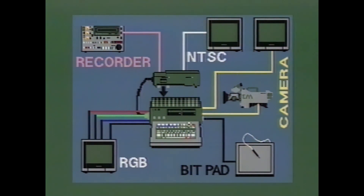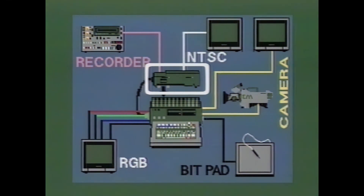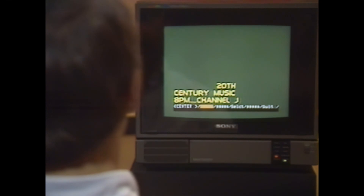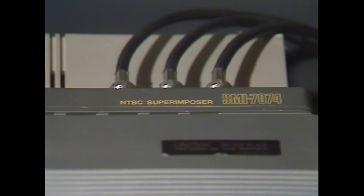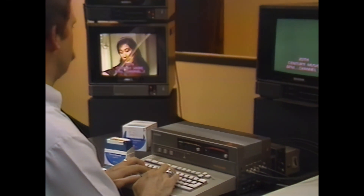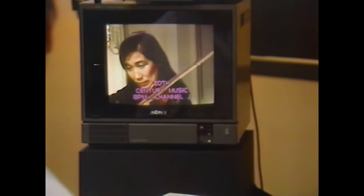With the SMI-7074 NTSC superimposer option, there are almost unlimited video recording opportunities. The SMI-7074 accepts RGB signals from the computer, encodes them to an NTSC signal, then combines that signal with the external video signal, so you can record the graphics and text you've created with the SMC-70G.